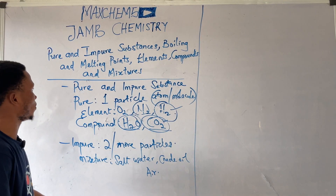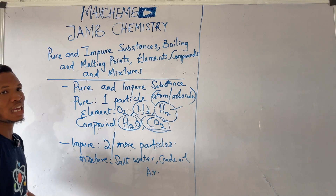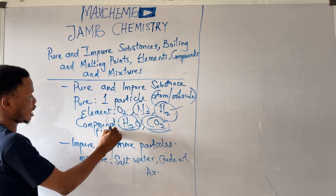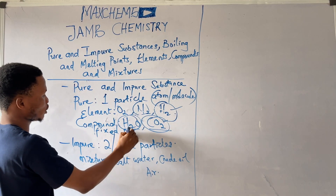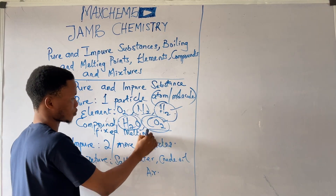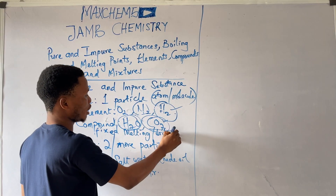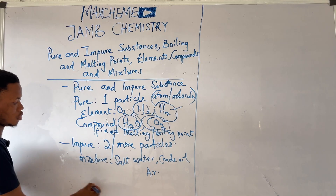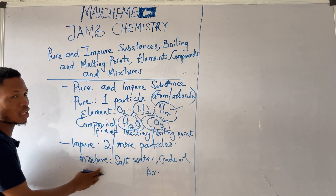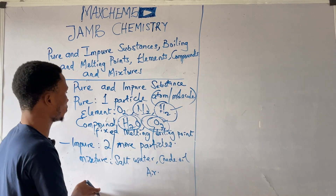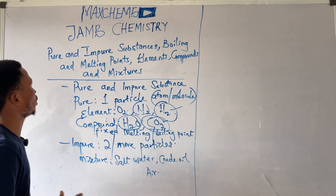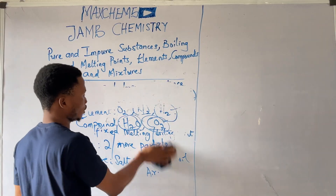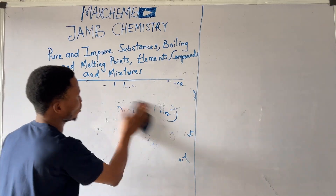You should know that pure substances have fixed melting and boiling points. While impure substances do not have a fixed melting and boiling point. Let us move to the next one: boiling and melting points.